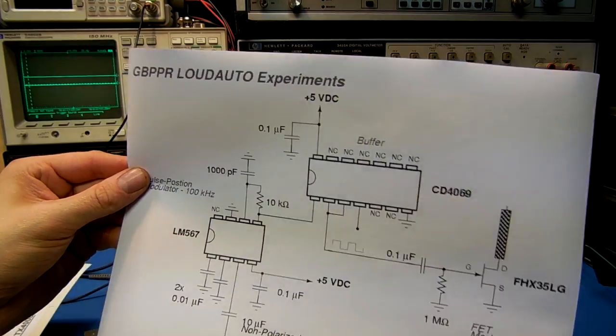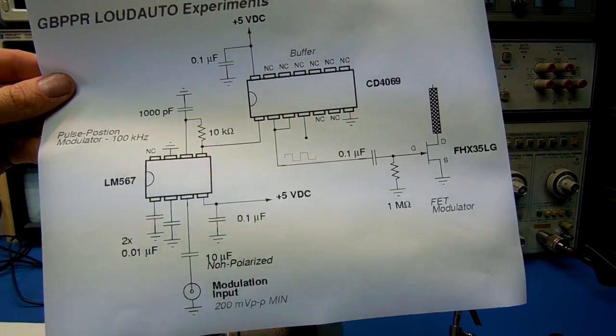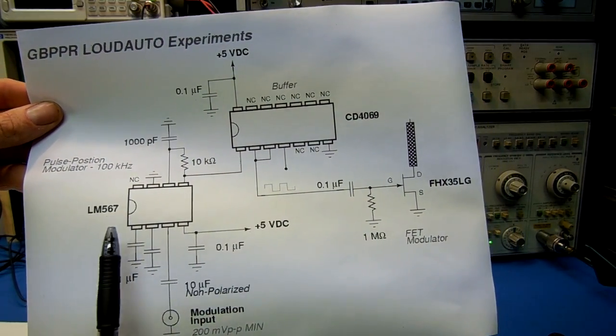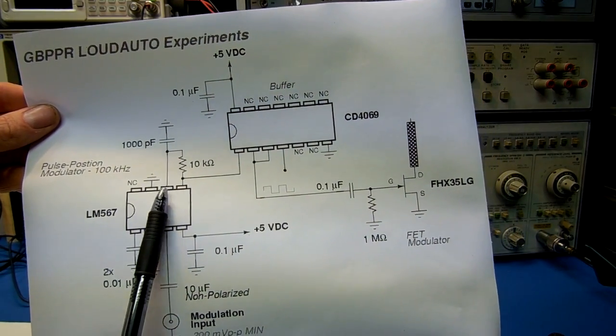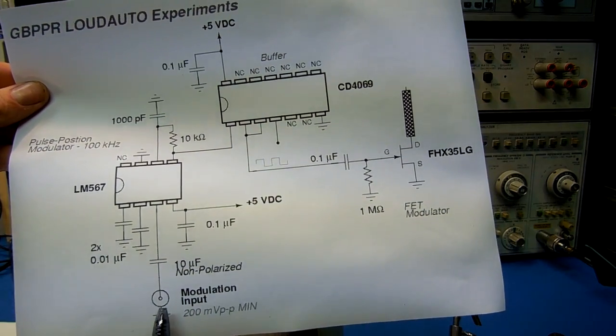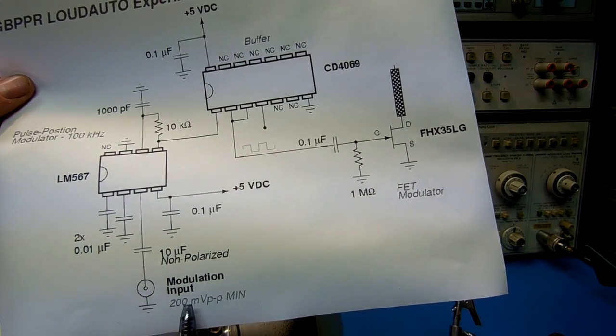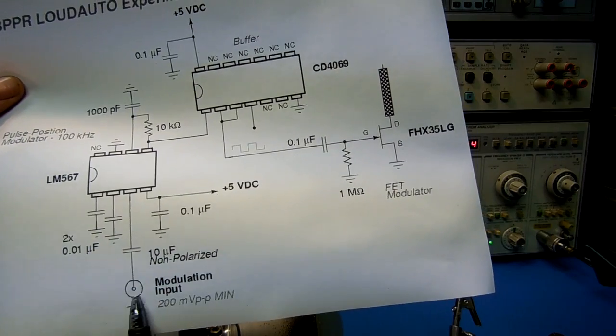For example, a pulse position modulator using an LM567 tone generator configured to generate the pulse train at around 100 kHz. The modulation input can be anything, but it needs to be very high level, 200 millivolts peak-to-peak in this particular case.